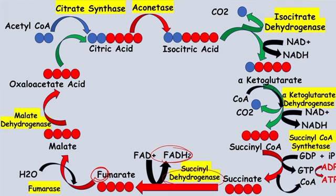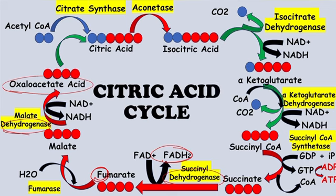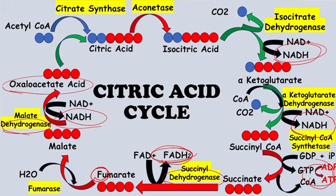Finally, malate is converted to oxaloacetate with the help of malate dehydrogenase. Again, as a dehydrogenase, NAD is converted to NADH. This oxaloacetate then combines with acetyl CoA to form citric acid again, continuing the cycle. The NADH and FADH2 produced enter the electron transport chain for oxidative phosphorylation, while the GTP formed is substrate level phosphorylation. Notably, both carbons of acetyl CoA are removed as CO2 during the cycle.